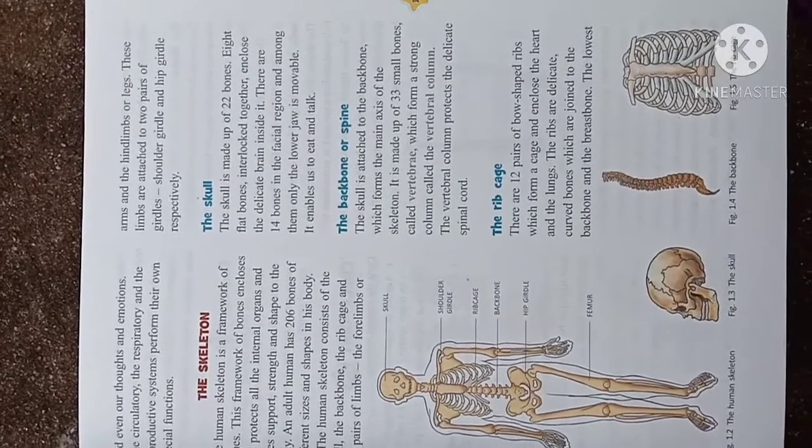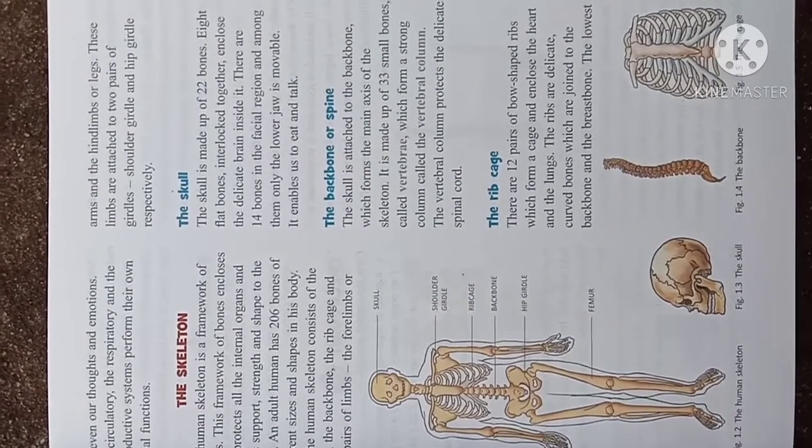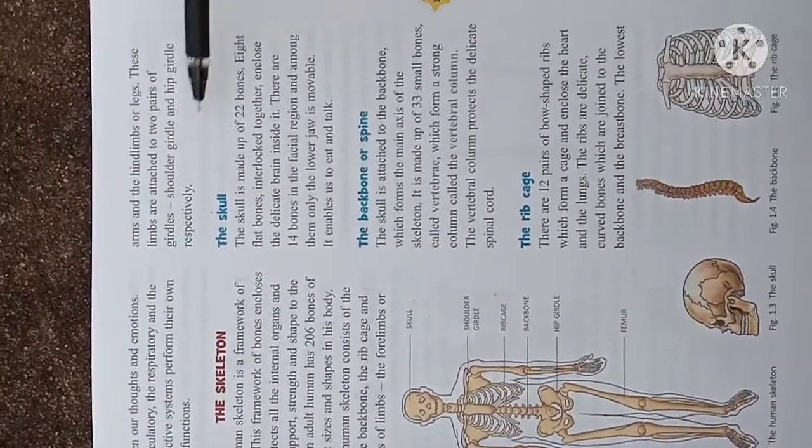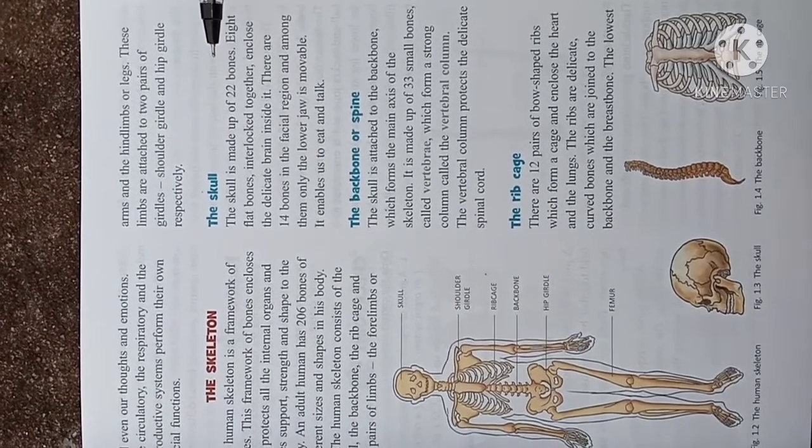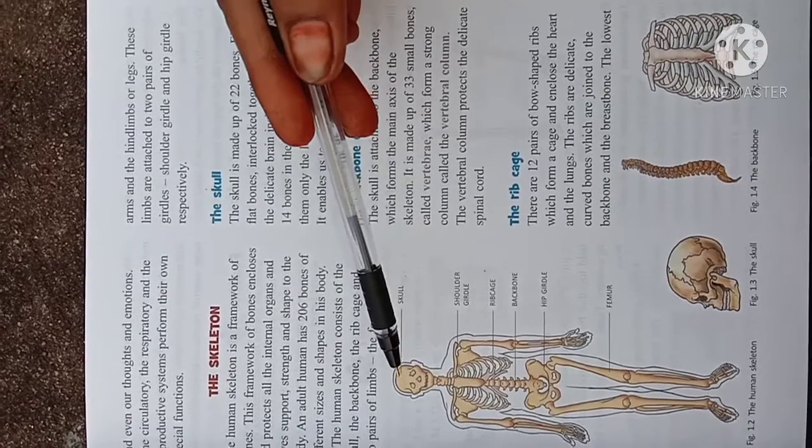In the previous class we have learned about the skeleton and also the organ system. In this skeleton we are having different parts, so one by one we can know them. The first one is the skull. The skull is made up of 22 bones.